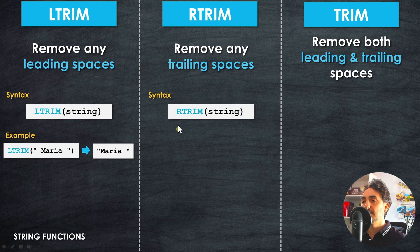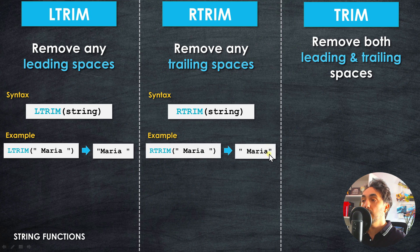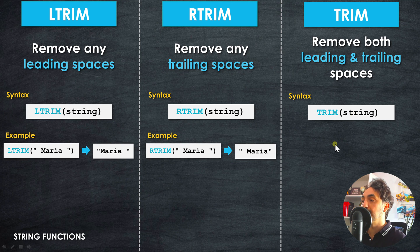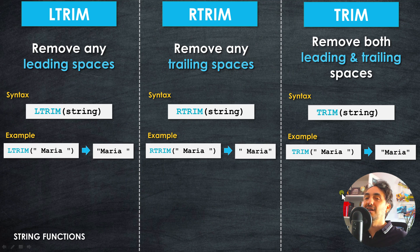RTRIM works the opposite way — it accepts the field string and the output is also a string. It removes only the trailing space, so the space on the left side stays. For TRIM, it accepts a string field and removes both the left and right spaces — so 'maria' with spaces on both sides gets fully trimmed.